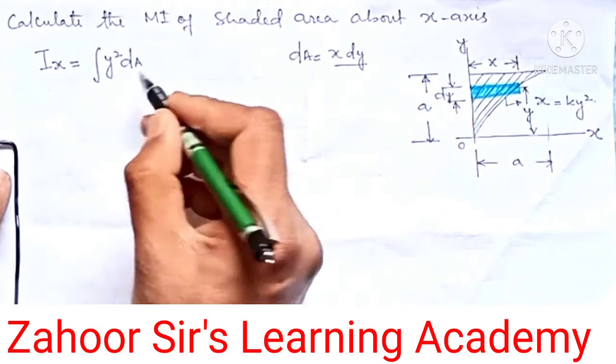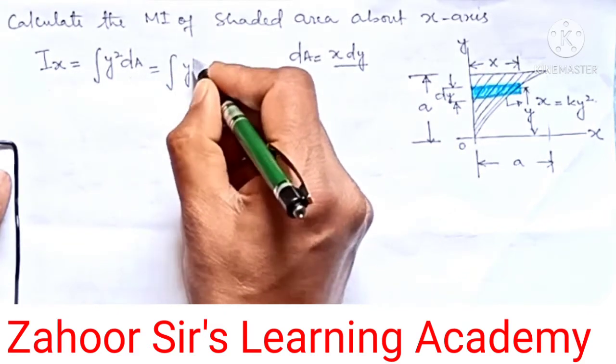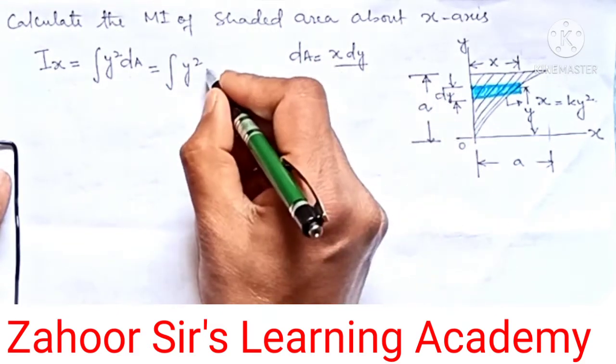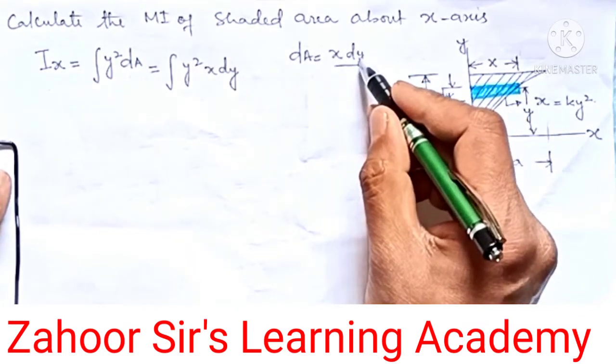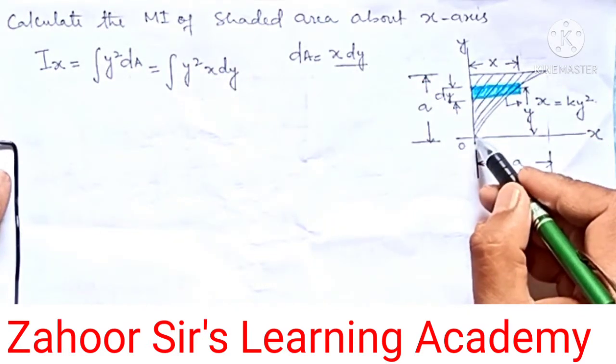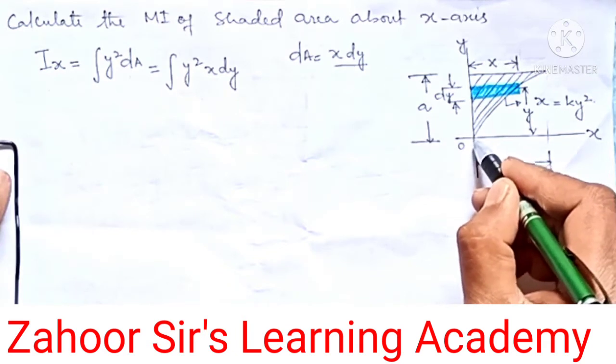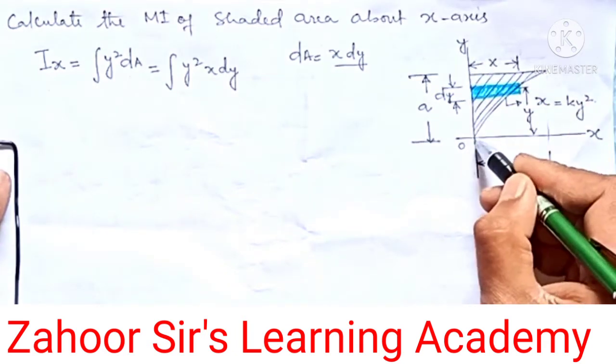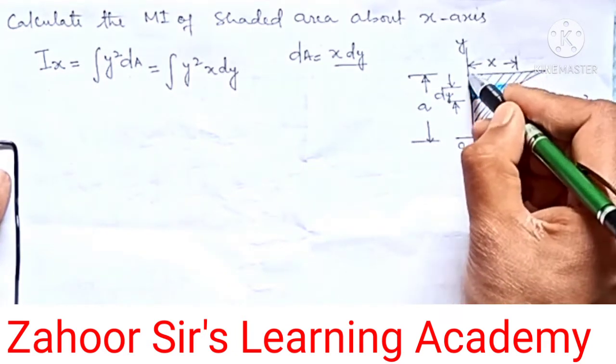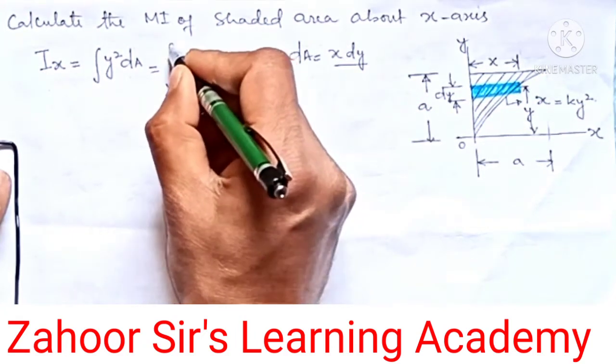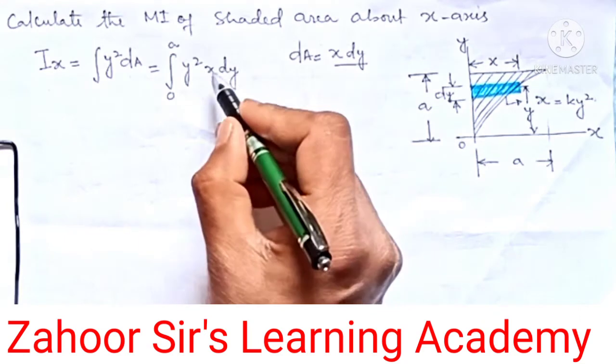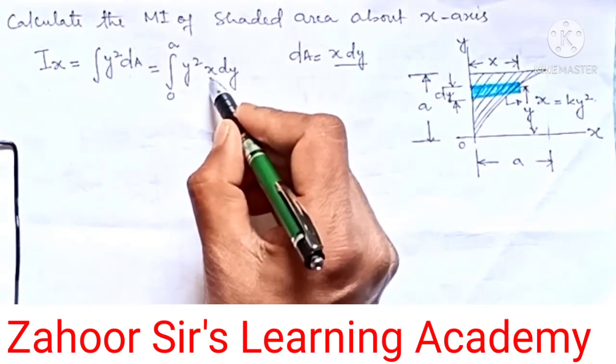We can substitute this value here, so that means integral of y squared. Instead of dA, we'll write x dy. The limits of dy are from 0 to a. The lower limit is 0 and the maximum limit is a.